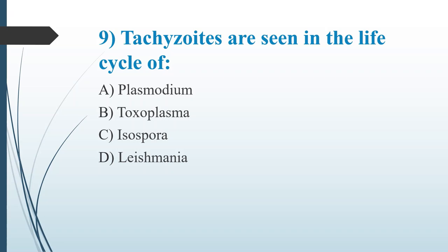Ninth question: Tachyzoites are seen in the life cycle of which organism? Option A: Plasmodium. Option B: Toxoplasma. Option C: Isospora. Option D: Leishmania. The answer is Option B, Toxoplasma. Toxoplasma gondii causes the most common opportunistic infection in patients with AIDS. The stages — tachyzoites, bradyzoites, and tissue cysts — occur in the intermediate host, which is the human.